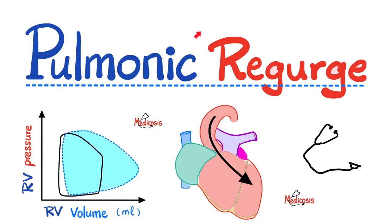Then we started a new series on valvular heart diseases. We talked about aortic stenosis, aortic regurg, mitral stenosis and mitral regurg, tricuspid stenosis and tricuspid regurg, pulmonic stenosis — and today we're talking about pulmonic regurgitation, also known as pulmonic insufficiency or pulmonic incompetence. Click the like button, click the subscribe button, and let's get started.